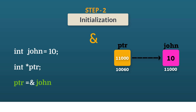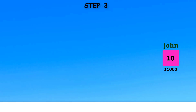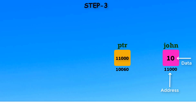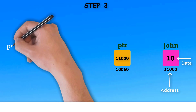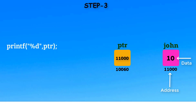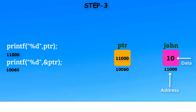So far we have learned how to declare a pointer and how to store another variable's address into a pointer. Now let's proceed to the third and final step. A normal variable like John contains two properties: first, it has its own address, and second, it has some value. Now the question arises, how many properties does a pointer contain? By printing the name of a pointer, we can get the value of the pointer, which is nothing but the address of John. By printing &ptr, we can get the address of the pointer itself — that is property number two.